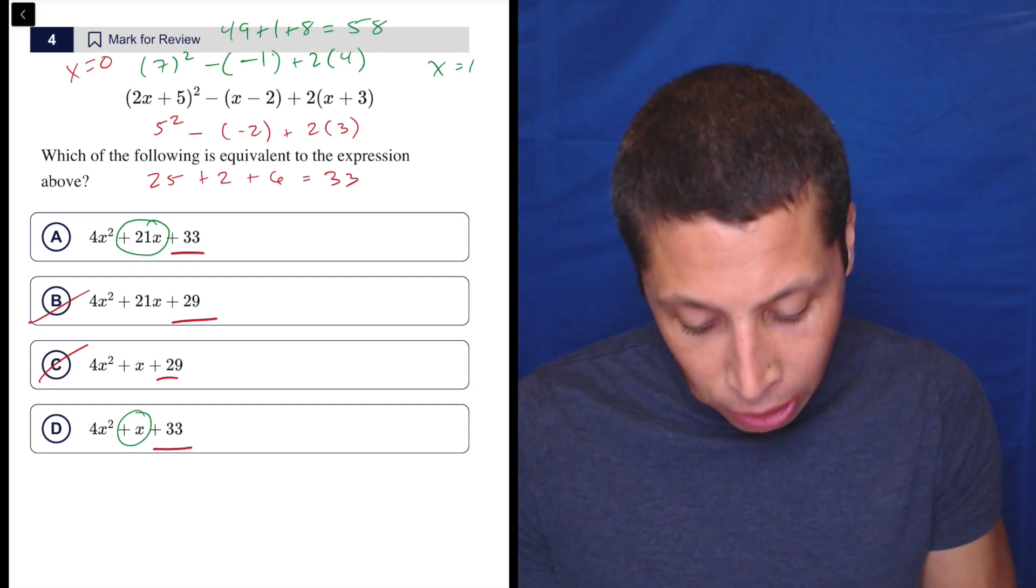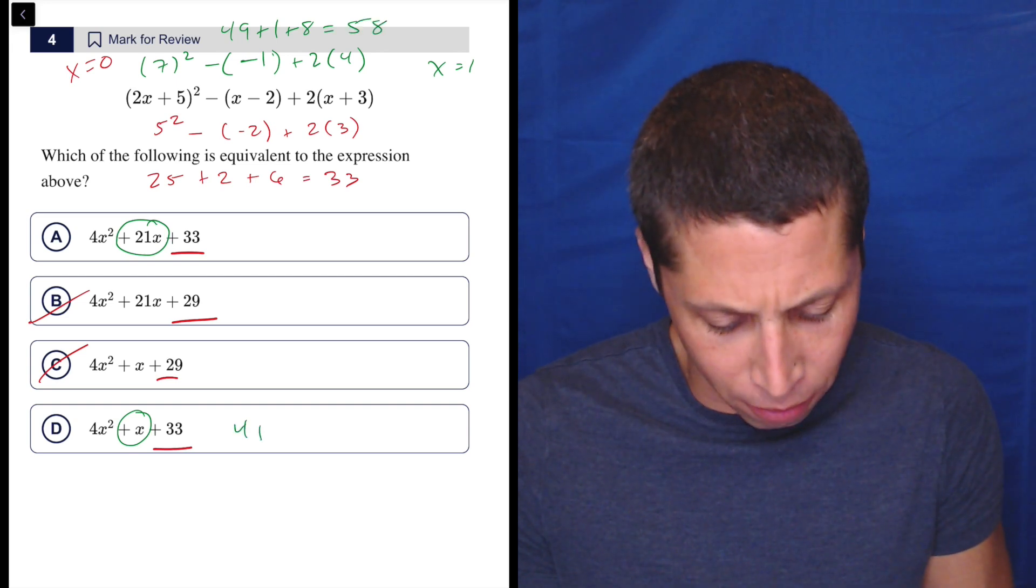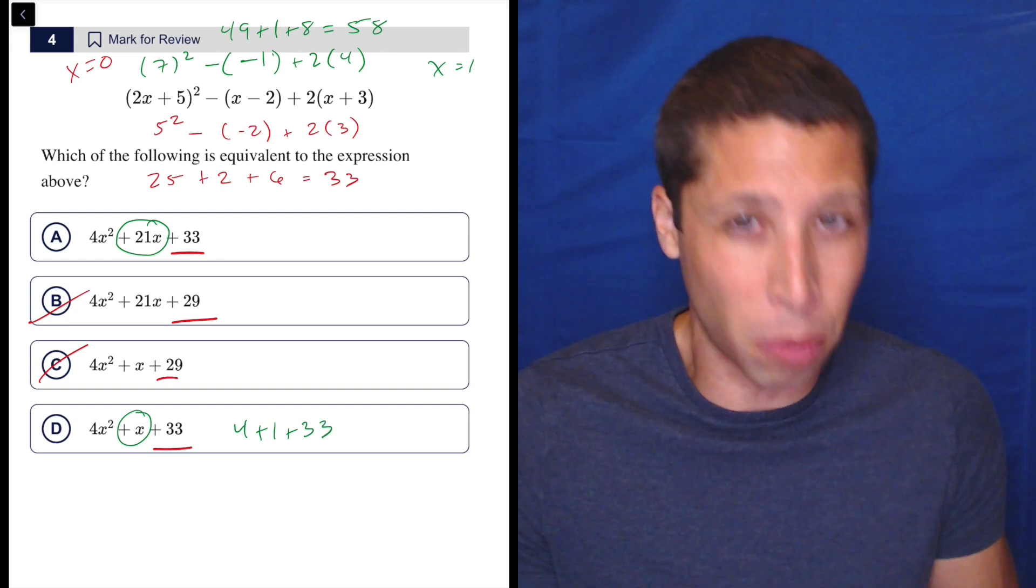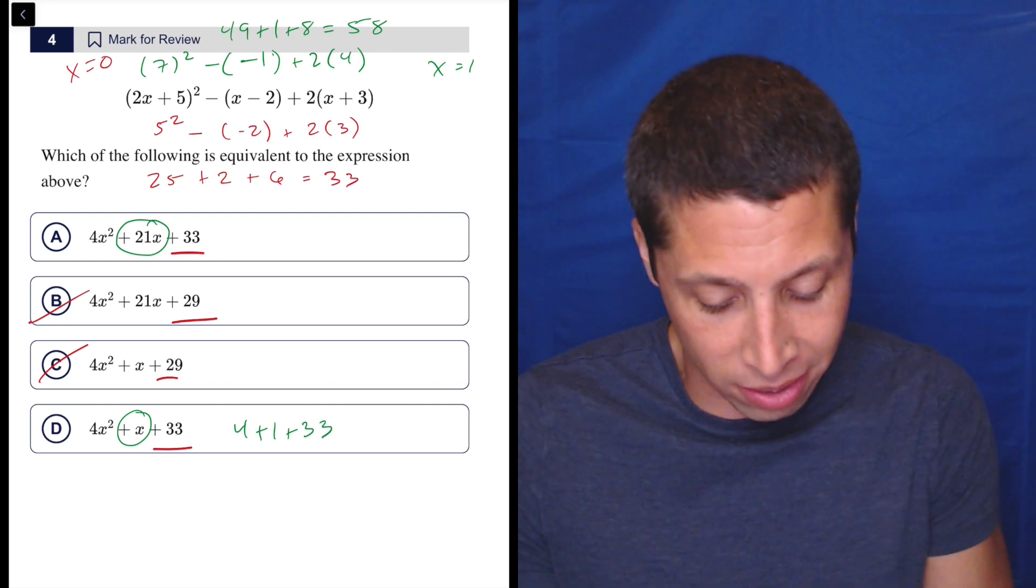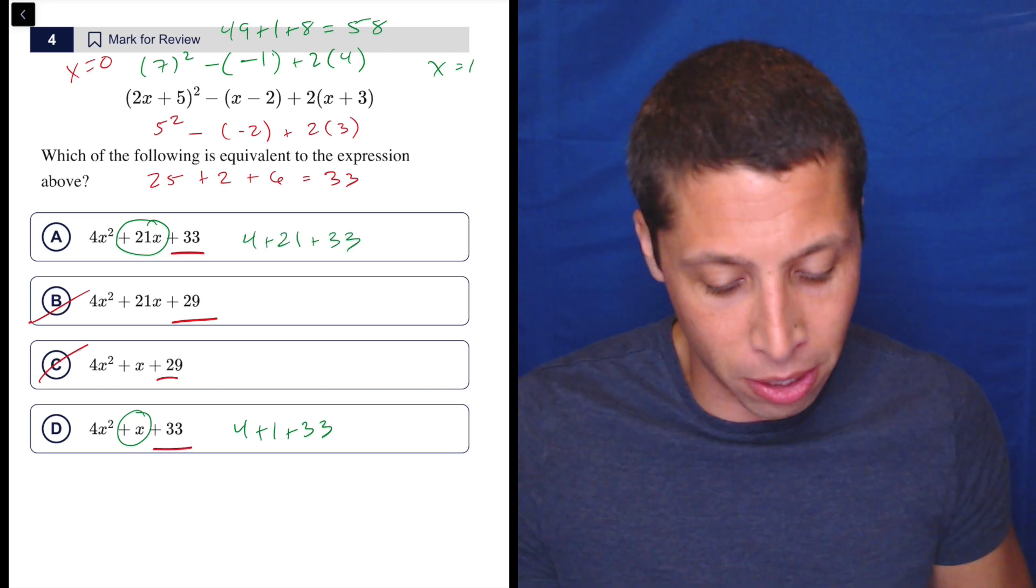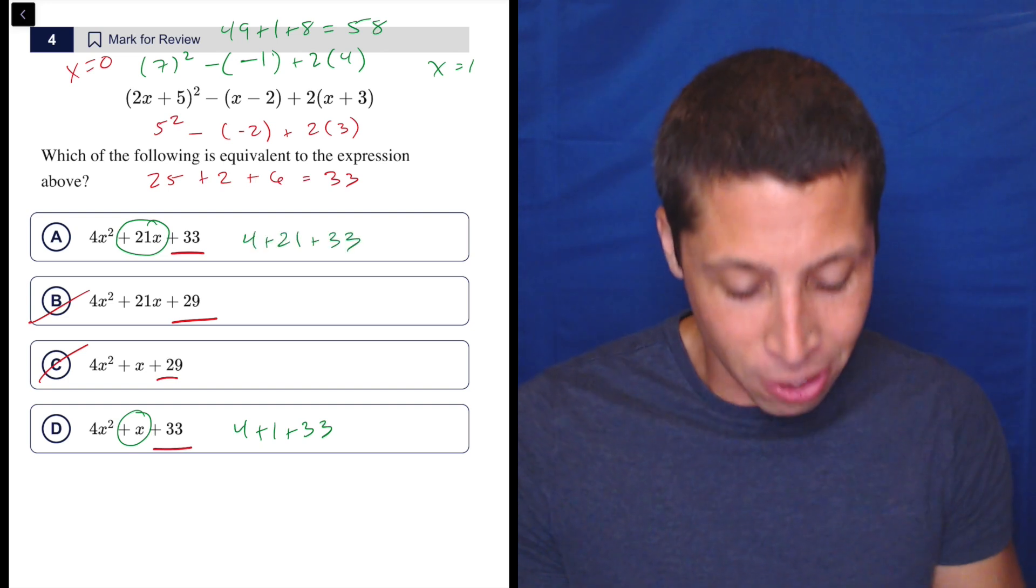So I can kind of already look at choice D and be like, okay, four plus one plus 33. That's too low. Like I don't even need to do the actual arithmetic or put it in a calculator to know that it's not going to get it. Four plus 21 is 25 plus 33 is 58. So that works.